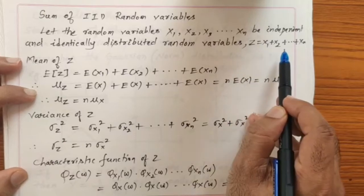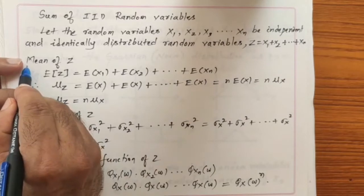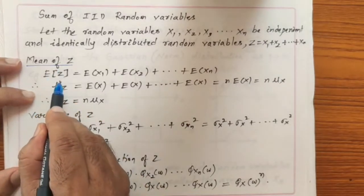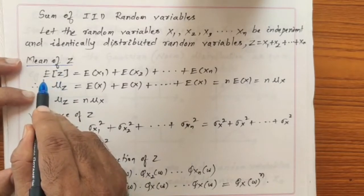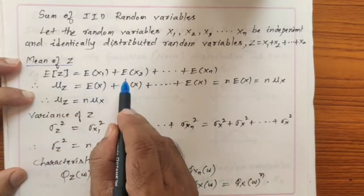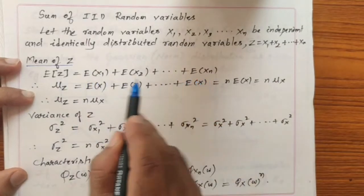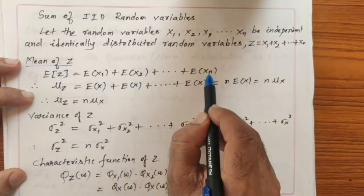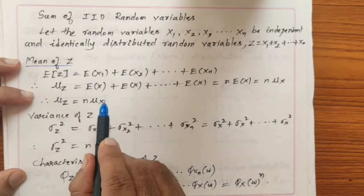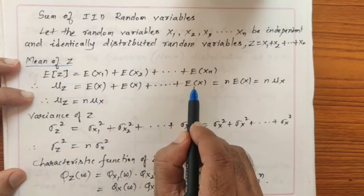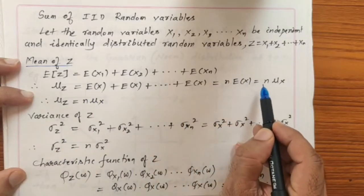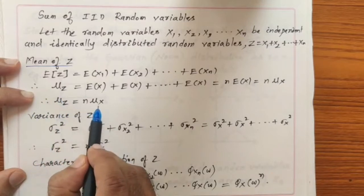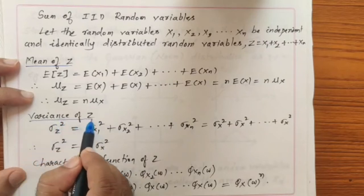First we find the mean of Z. The mean of Z means the expected value of Z. Since Z is linear, we can write E[Z] as E[X1] plus E[X2] plus ... plus E[Xn]. Since X1, X2, ..., Xn are identically distributed, their mean is also the same. So we have E[X] added n times, which equals n times E[X]. Therefore, the mean value of Z is equal to n times the mean value of X.